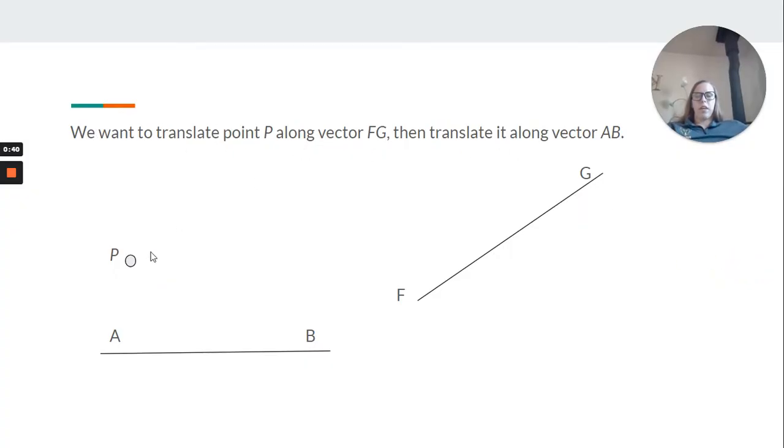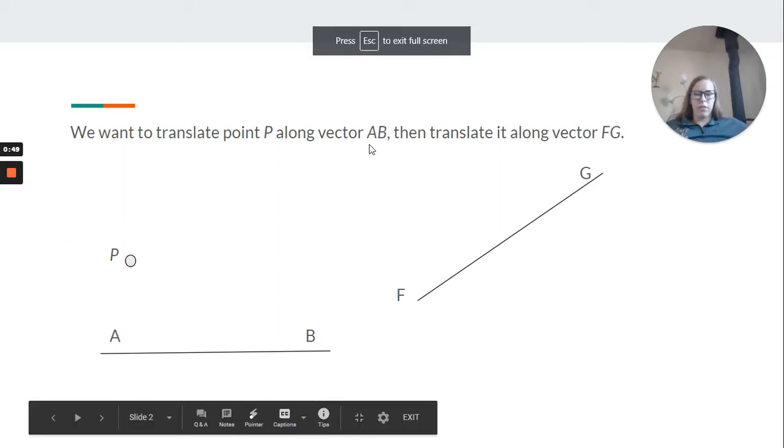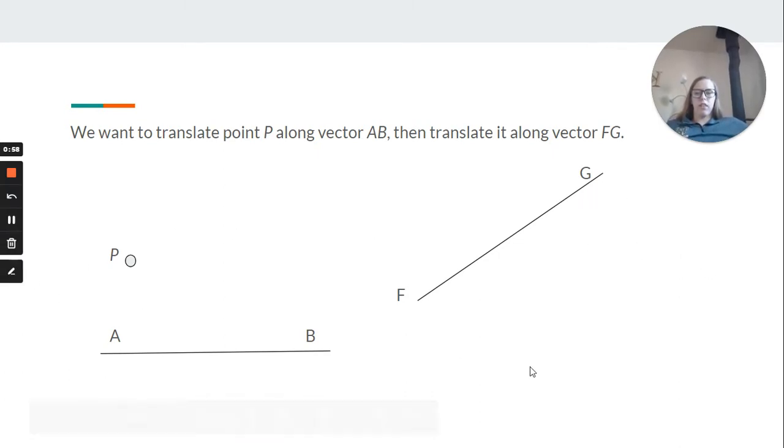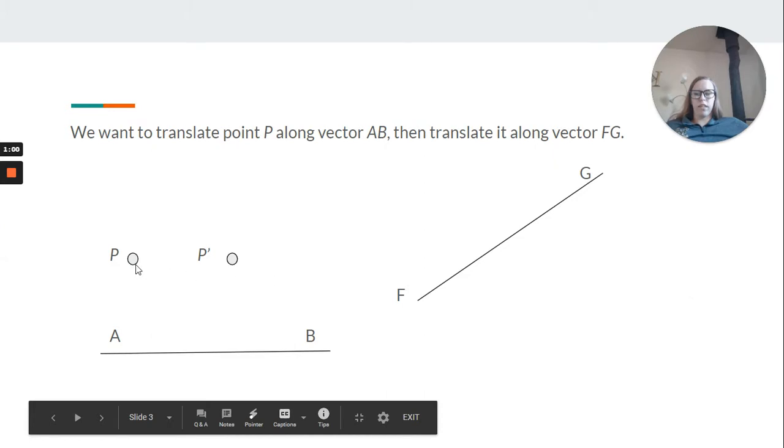We want to translate point P right here along vector AB, then translate it along vector FG. Actually we're going to do it the opposite way. So first translate along vector AB, then along FG. So first we translate it along AB. We just move it. Easy enough.